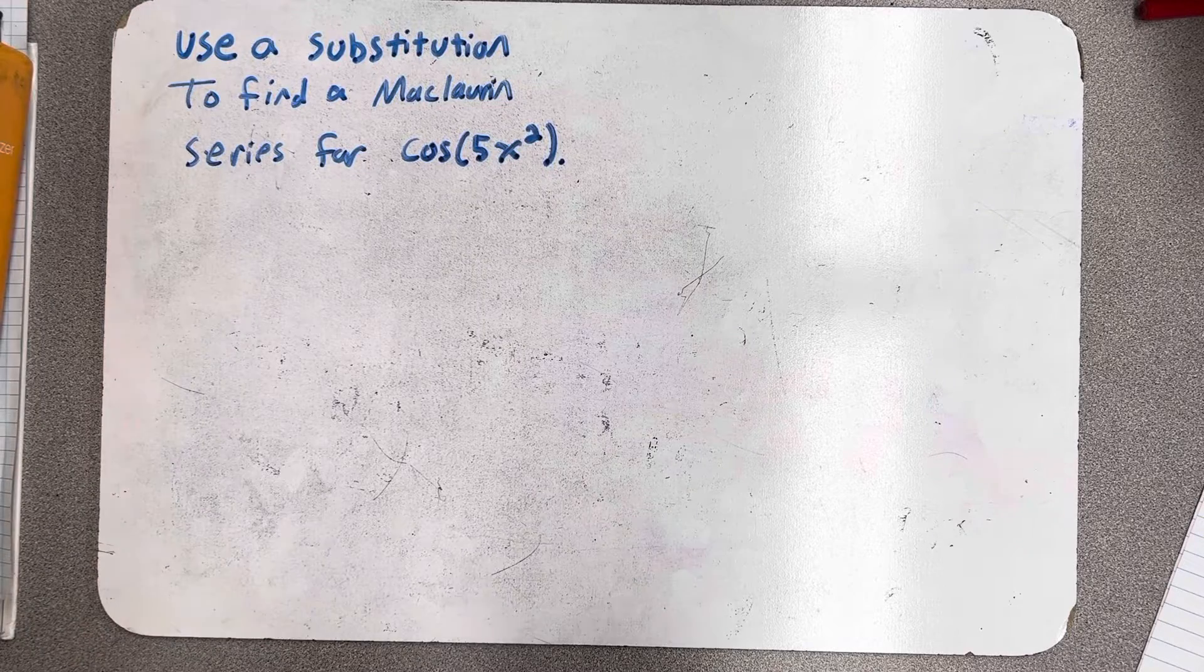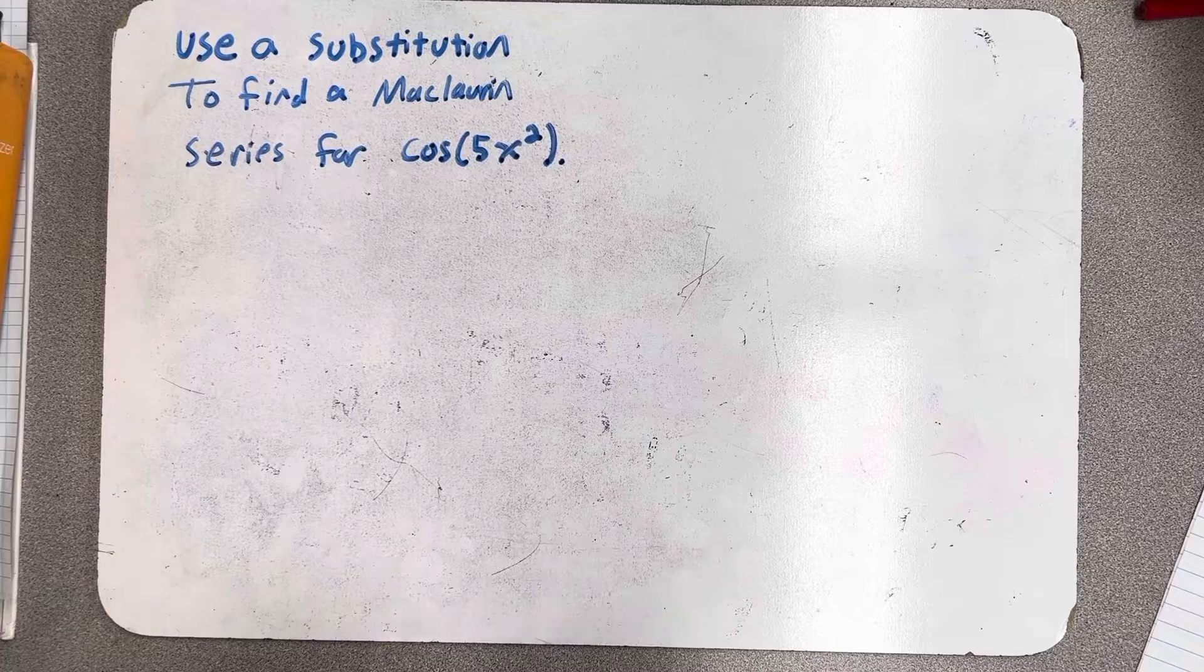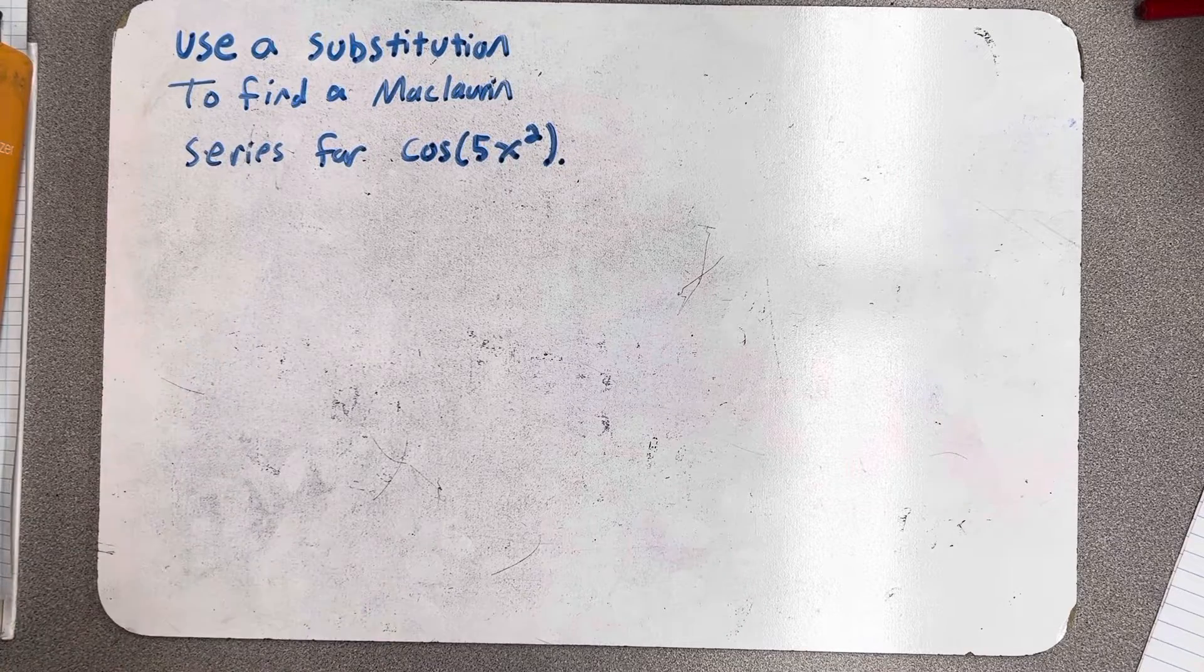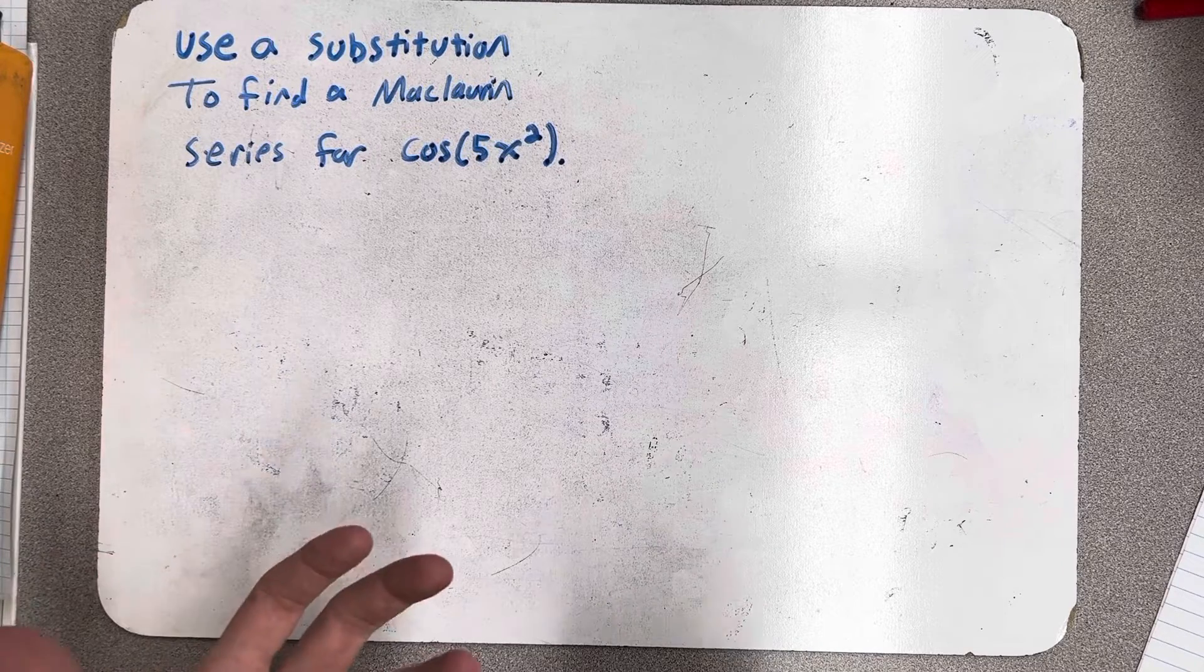We've been asked to find a Maclaurin series for cosine of 5x squared, but more specifically, we've been asked to use a substitution to do it.